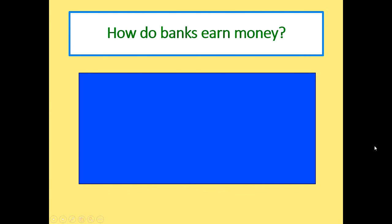First question: how do banks earn money? In short, they charge fees or interest. One major way banks make money is by lending out for purchases — when you buy a home you take out a mortgage and pay it back with interest; when you buy a car you take out a loan and pay it back with interest.